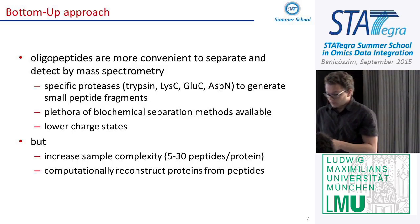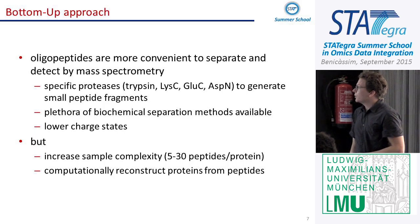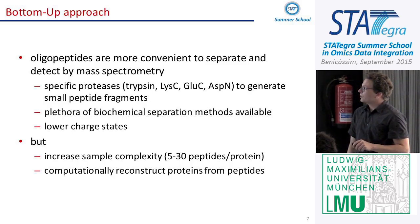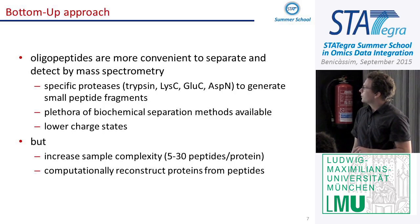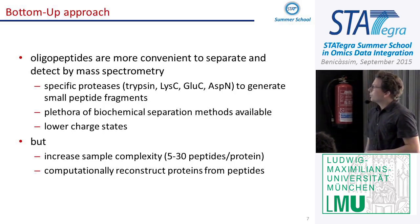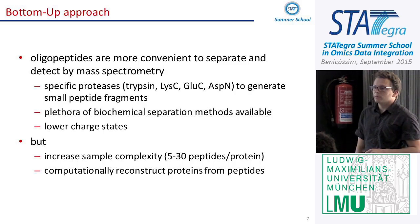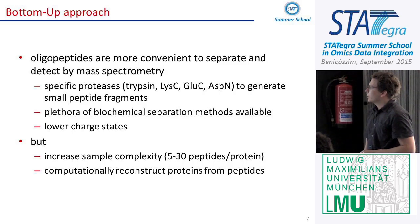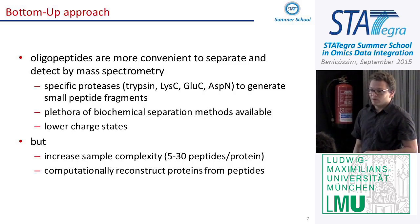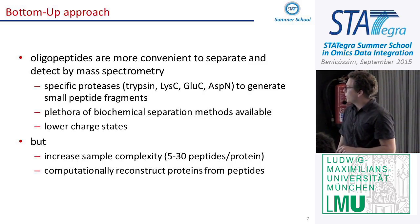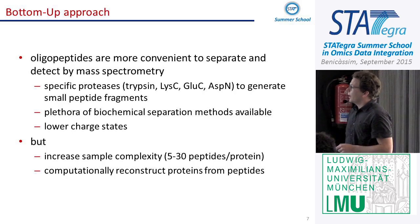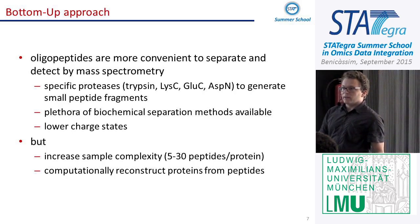That's why the bottom-up approach was developed. Instead of measuring the full protein, we cleave the protein into small peptides, which are much more homogeneous to work with. We have many separation technologies available — ion-based interactions, and reverse phase. Peptides adopt a lower number of charge states. However, if you cleave a protein to oligopeptides, you obtain typically around 5 to 30 peptides per protein, increasing sample complexity significantly, and you have to reconstruct proteins from the peptide data.